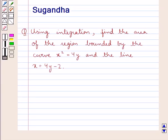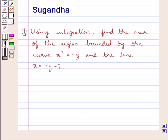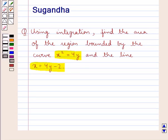Hello and welcome to the session. In this session we discuss the following question: using integration, find the area of the region bounded by the curve x squared equal to 4y and the line x equal to 4y minus 2. Let us now proceed with the solution.